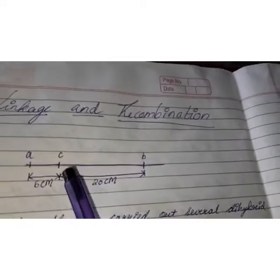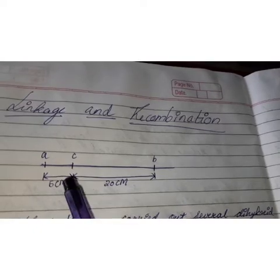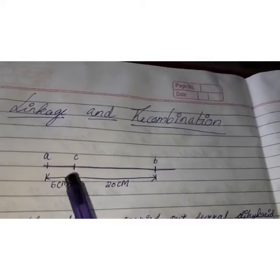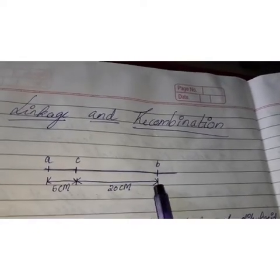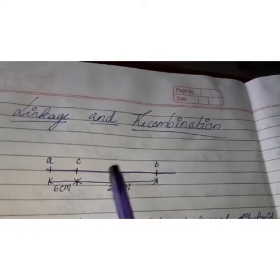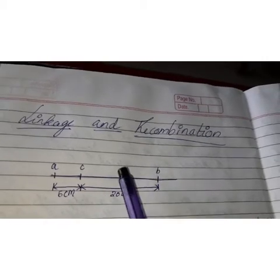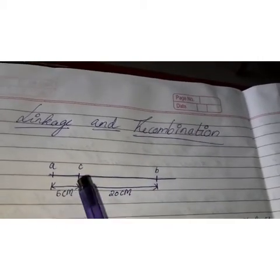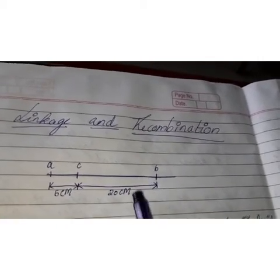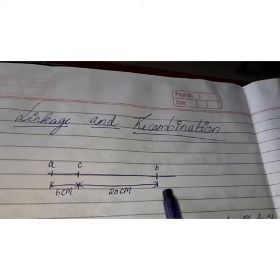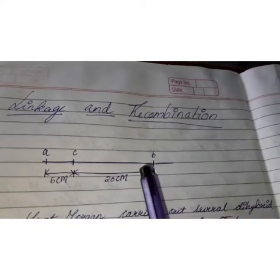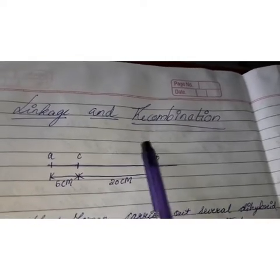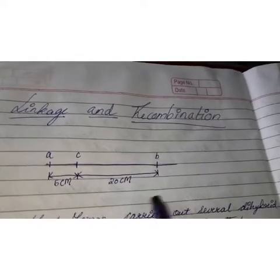Similarly, in case of C and B, since the distance between C and B is more, there are more chances of recombination occurring in between and these genes are less likely to be transferred together. I hope this linkage concept is clear to you.